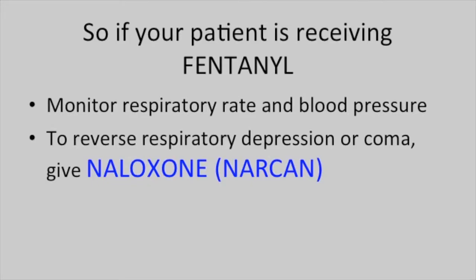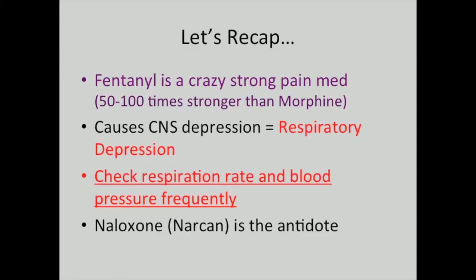Nursing implications include monitoring respiratory rate and blood pressure. To reverse respiratory depression or coma, give naloxone or Narcan. Fentanyl is 50 to 100 times stronger than morphine. Frequently check respiratory rate and blood pressure. Narcan or naloxone is the antidote.